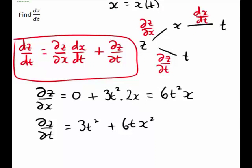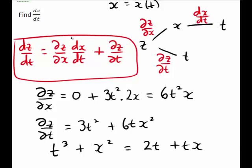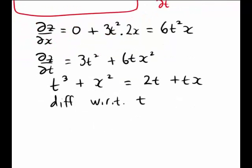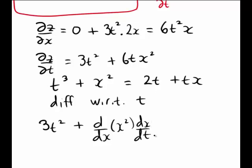We also had the expression t cubed plus x squared equal to 2t plus tx, and we use that to find the full derivative dx/dt — that is not a partial derivative, so here we're treating both x and t as variables. Because it's dx/dt we want, we differentiate term by term with respect to t. The derivative of t cubed with respect to t is just 3t squared. The derivative of x squared with respect to t is, by an ordinary chain rule, the derivative with respect to x of x squared times dx/dt. On the right-hand side, differentiating 2t with respect to t gives 2.